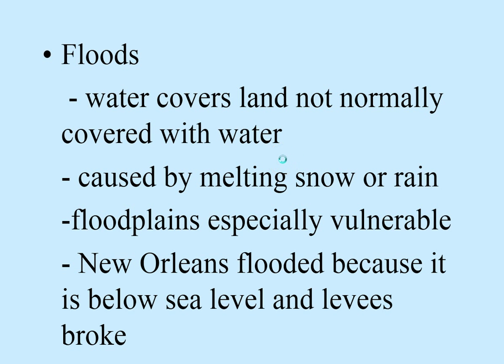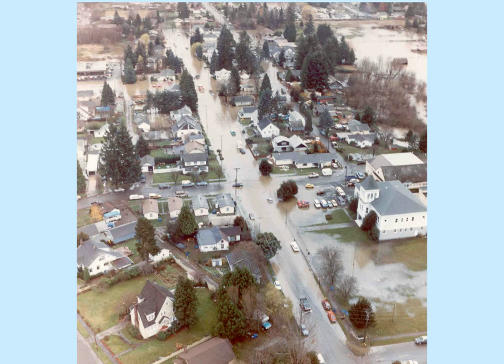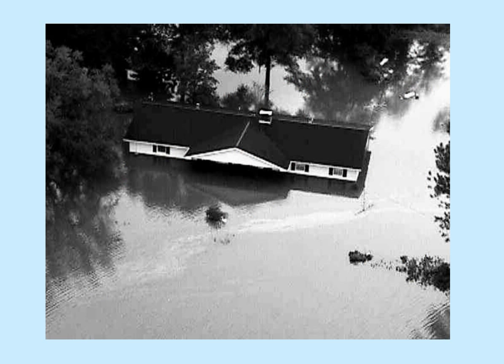Floods — land that's normally not covered by water becomes covered by water. It can be caused by numerous things: a lot of rain causing rivers to overflow their boundaries, melting snow, or as happened in New Orleans, a hurricane whose waters broke the levees and suddenly flooded the city. Floods can happen in a variety of ways — here are pictures of flooded towns.